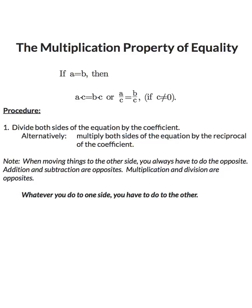Our procedure to solve these equations is to divide both sides by the coefficient. Alternatively, you can multiply both sides by the reciprocal of the coefficient — we will use this alternative method when dealing with fractions. Note that when moving things to the other side you always do the opposite: addition and subtraction are opposites, and multiplication and division are opposites.